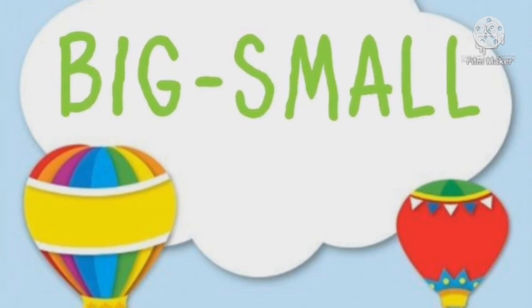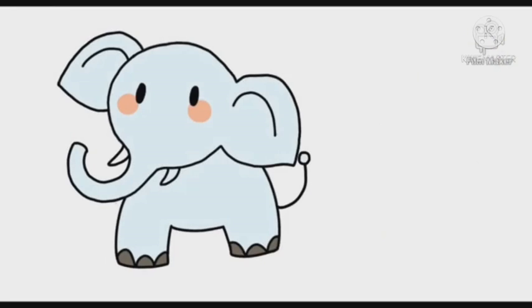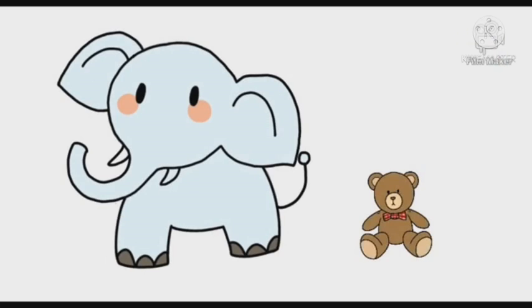So now let's understand the concept with the help of some examples. In the first example, there is an elephant and a teddy bear. The elephant is big — elephant bada hai. And the teddy bear is small — teddy bear chota hai.